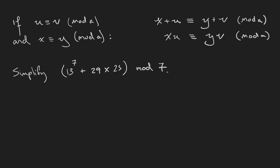So 13 modulo 7 is equivalent to 6, but it's also equivalent to negative 1. This is because 13 is equivalent to negative 1 mod 7. 29 is 1 off of 28, which is a multiple of 7. So 29 is equivalent to 1.